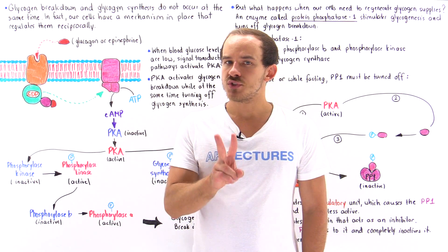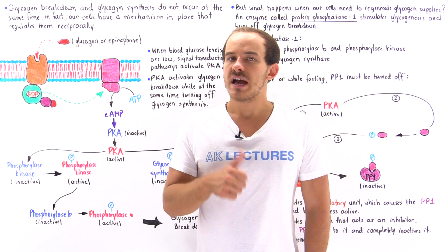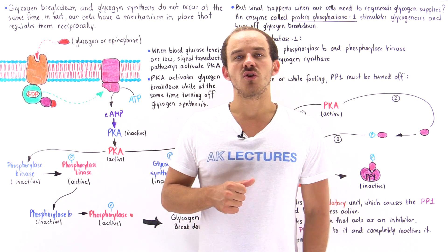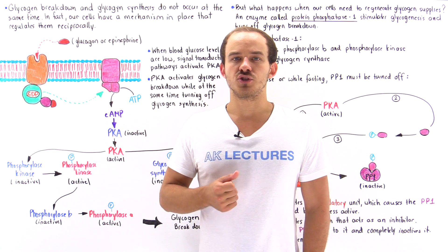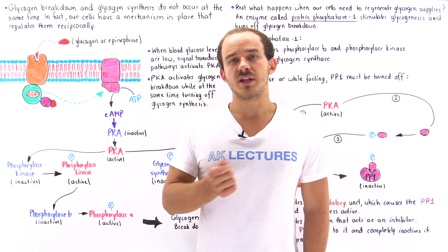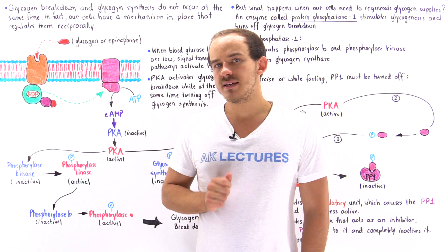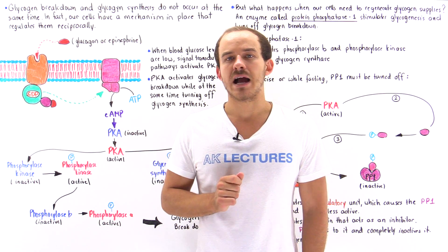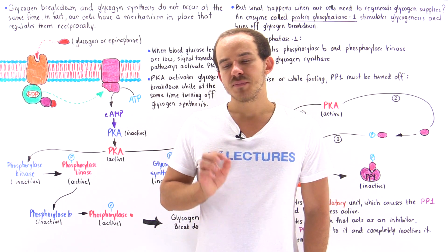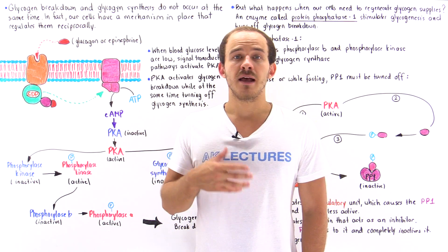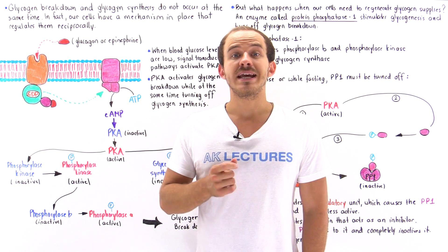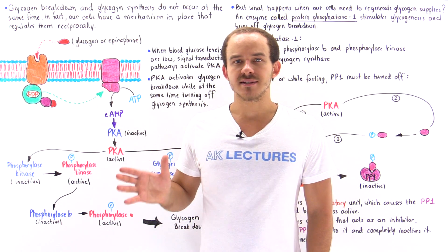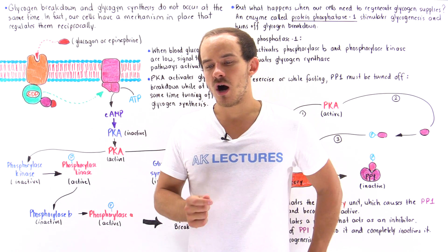Glycogen metabolism involves two important processes. We have the synthesis of glycogen from glucose molecules, glycogenesis, and we also have the breakdown of glycogen into glucose, glycogen degradation. These two processes never take place at the same exact moment in time inside our cells. Our cells have a mechanism that regulates these processes in a reciprocal fashion — when one process is on, the other must be off.